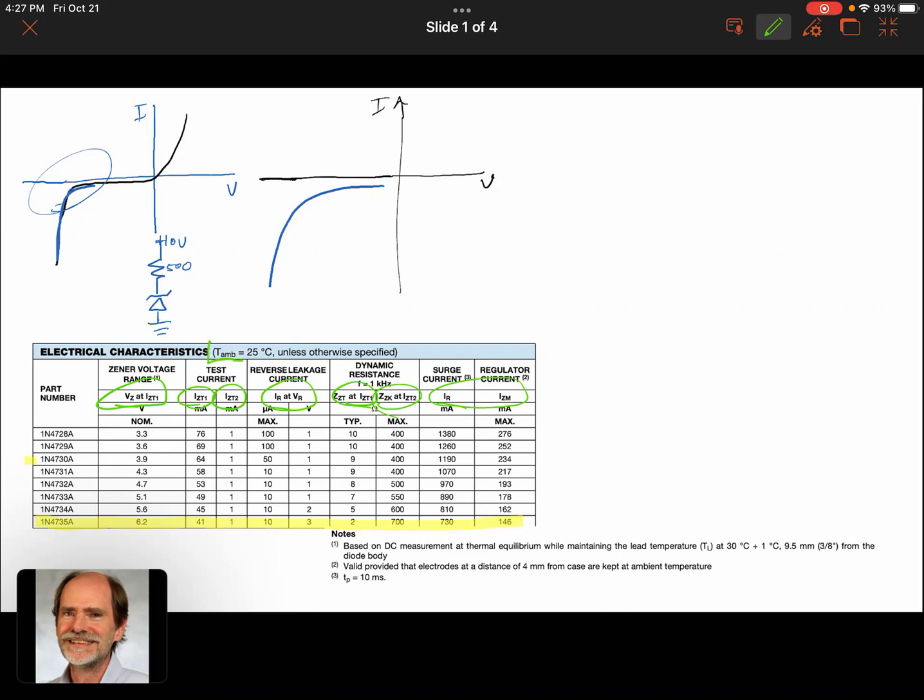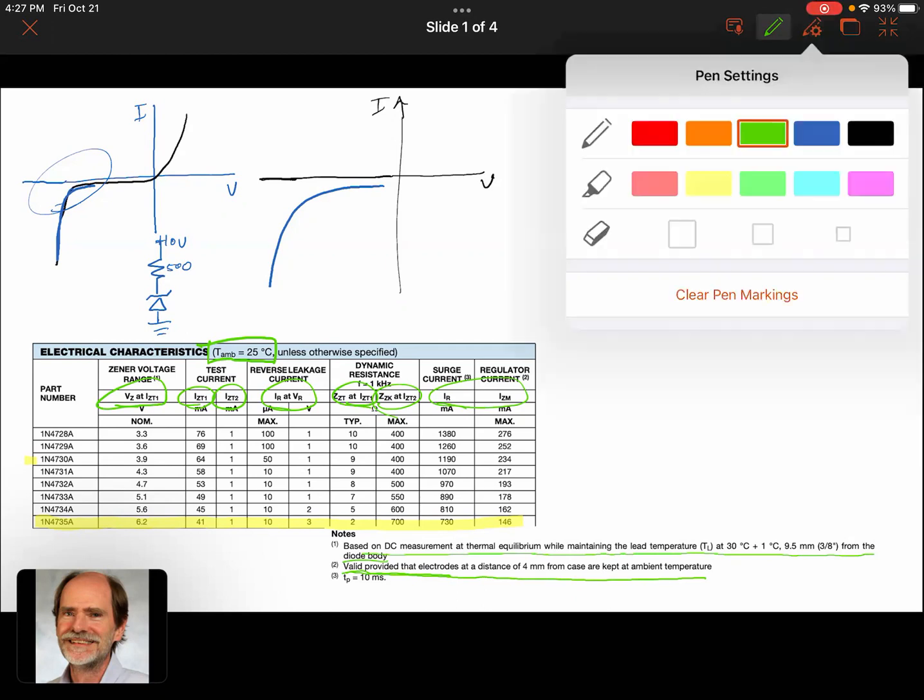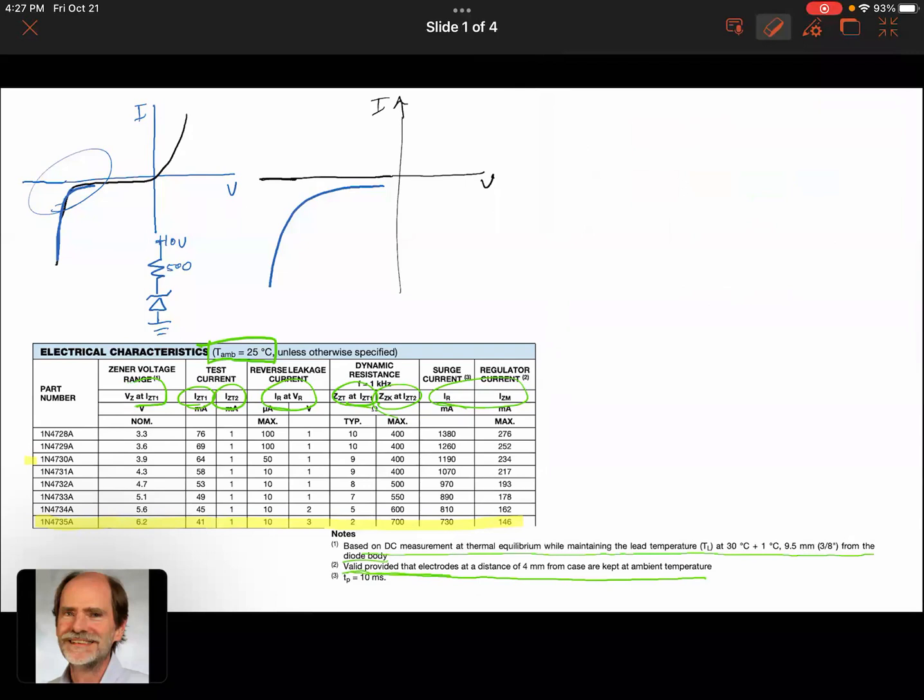I first want to draw your attention to—it does show you that it's all at 25 degrees C, but there's actually some more important details there. It's based on diode measurements at thermal equilibrium while maintaining lead temperature at 30 degrees C plus or minus 1 degree C, measured 9.5 millimeters from the diode body.